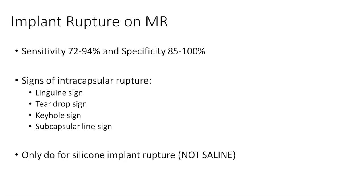Classic signs of intracapsular rupture on MRI for silicone implants are the linguine sign, the teardrop sign, the keyhole sign, and the subcapsular line sign. Please remember, we only do MRI for silicone implant rupture, not saline. Saline implant rupture is a clinical diagnosis.